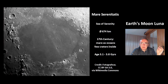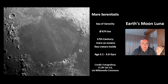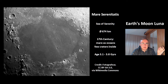This is Mare Serenitatis, the Sea of Serenity, with a size of 674 km. In the 17th century, people believed these maria were oceans. There are very few craters inside, meaning the maria are not the oldest feature on the surface. This mare has an age of 3.1 to 3.8 billion years.